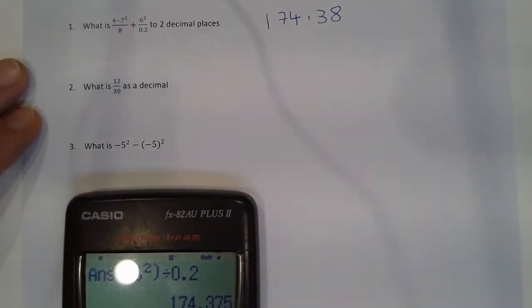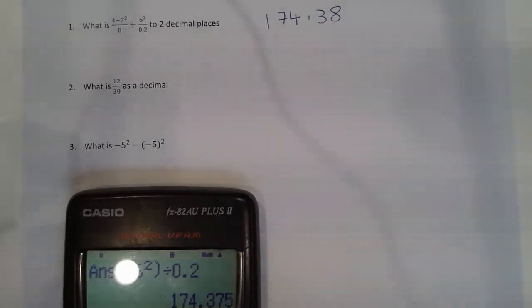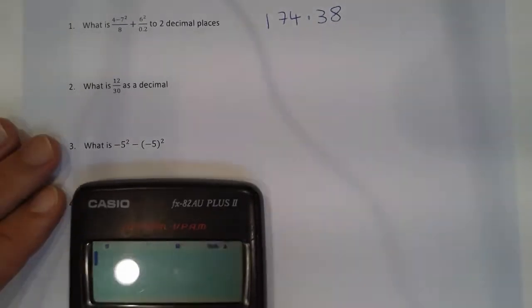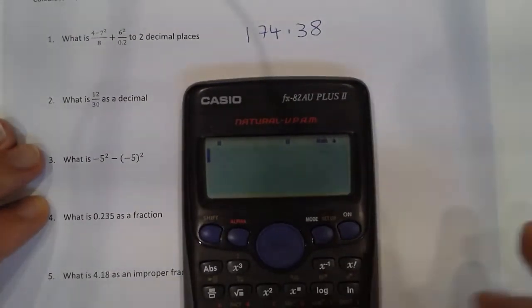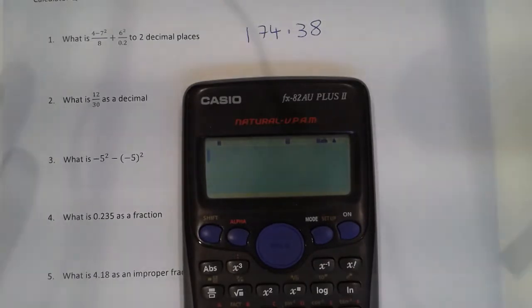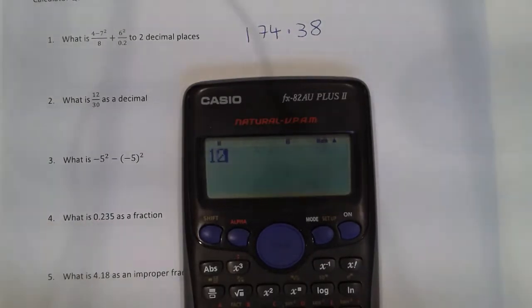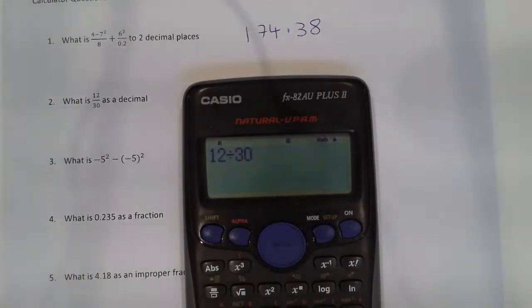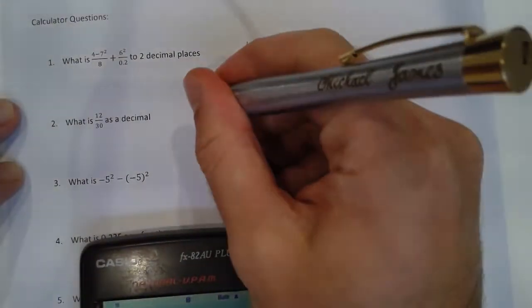What is 12 over 30 as a decimal? Now this is a really common question. The best way of doing it is, remember, fraction and division are exactly the same thing. So 12 divided by 30, you can see I've typed it in, gives me 0.4. So it actually does it automatically this time. So I'll just write in 0.4.